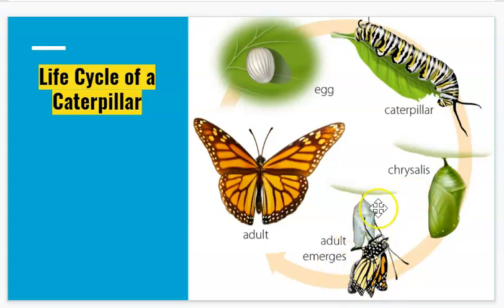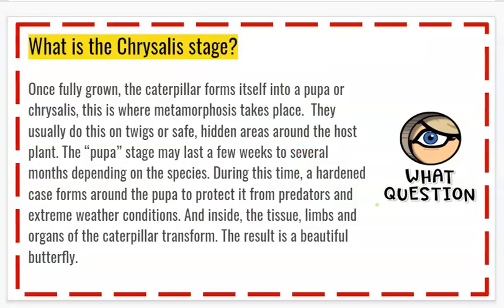After several weeks, an adult butterfly emerges, and then the last stage of the life cycle of a caterpillar is the adult butterfly. What is the last stage of the life cycle of a caterpillar? Hopefully you said the last stage is the butterfly.